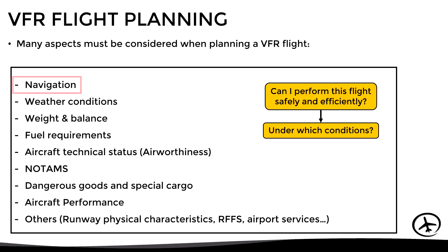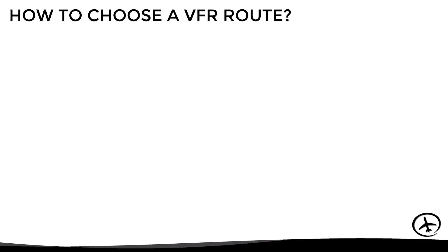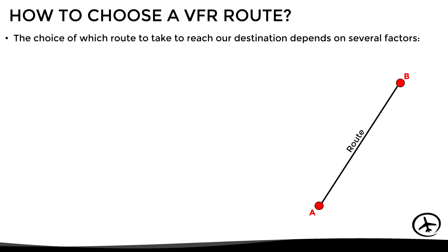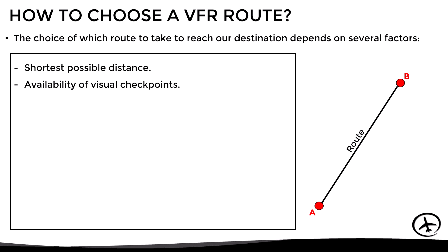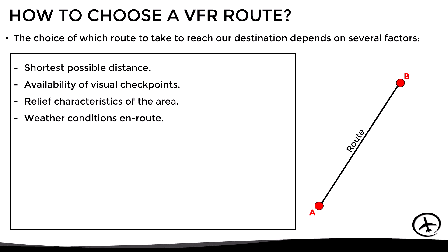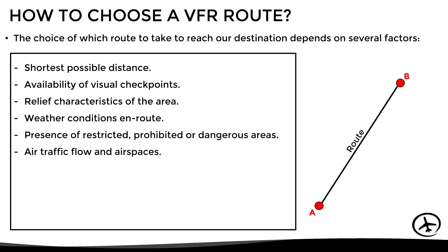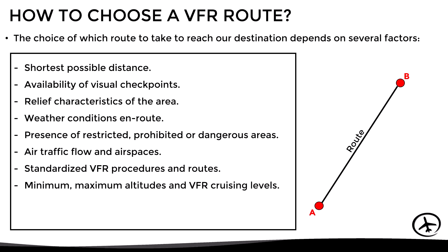Since we are in the general navigation section of the channel, we will focus only on the route selection and all the considerations related to it. The selection of the route will depend on different factors such as the shortest possible distance, the availability of visual checkpoints, the characteristics of the terrain, the expected weather conditions, restricted, prohibited, or dangerous areas along the route, air traffic flow and airspace structures, standardized VFR procedures, minimum, maximum, and available VFR cruising levels, the range of the aircraft, and in some cases the sunrise and sunset times.